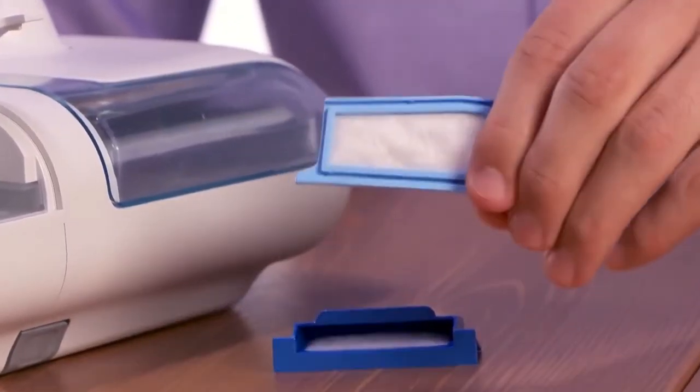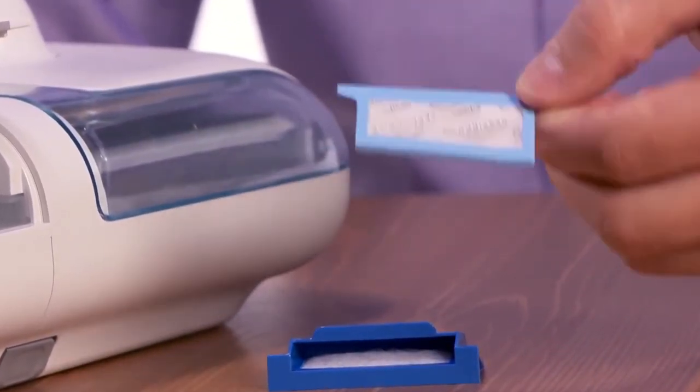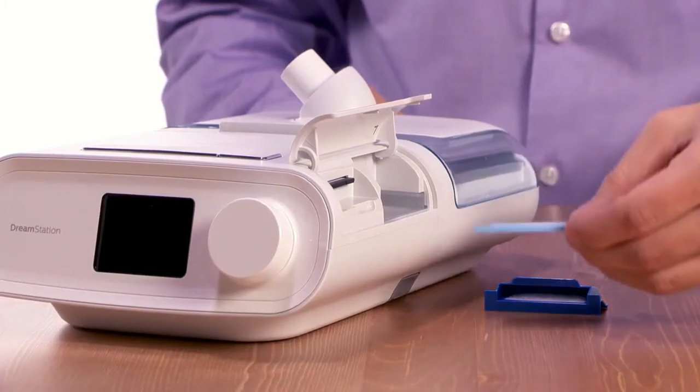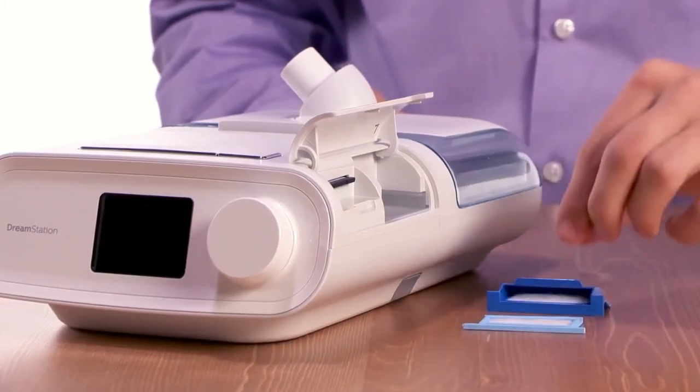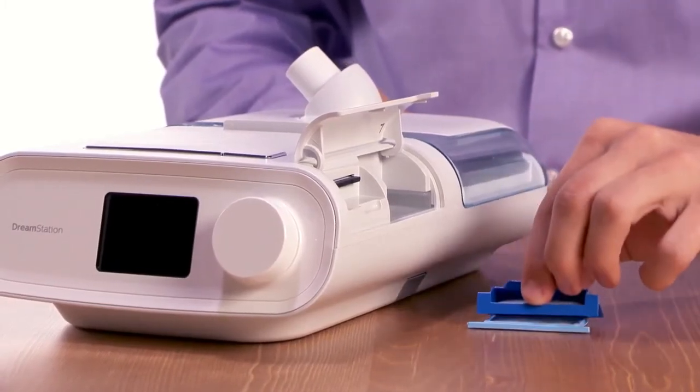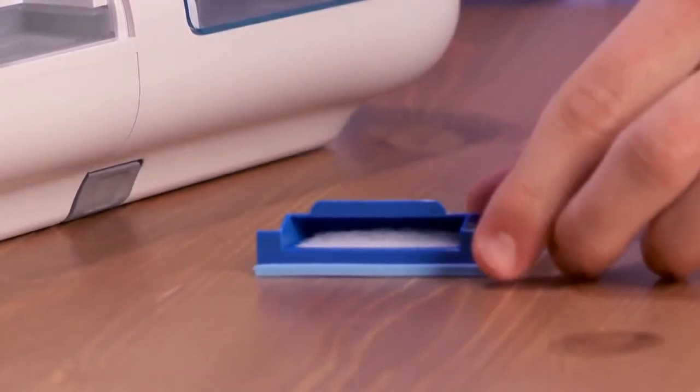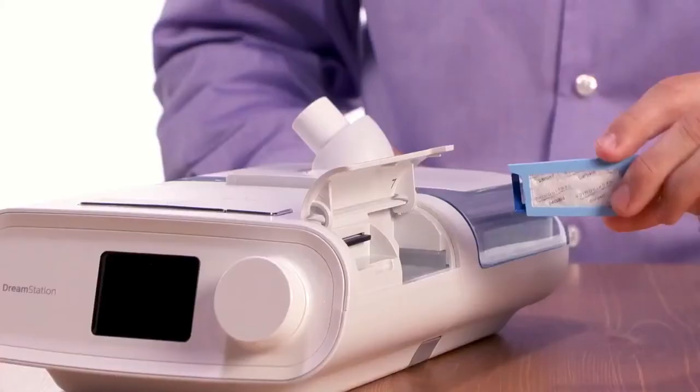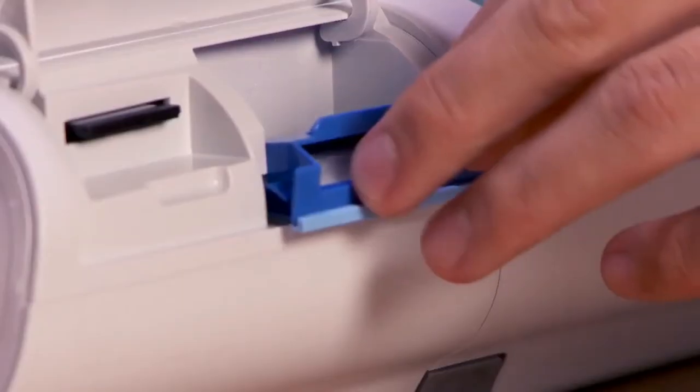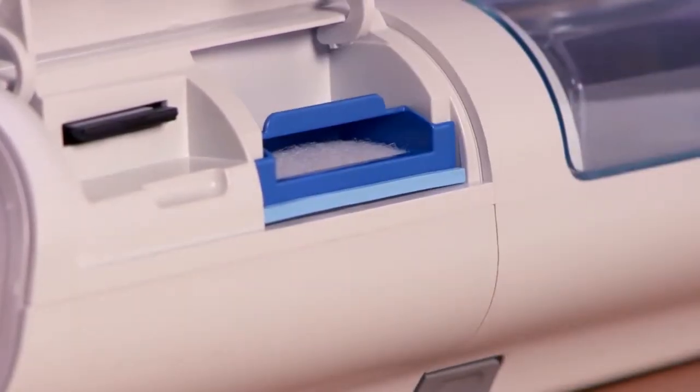The disposable ultrafine filter provides additional filtration of very fine particles. If you are using both filters, place the optional filter under the reusable one and snap them together. Put the filter assembly back into the device and swing the door closed.